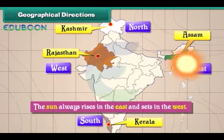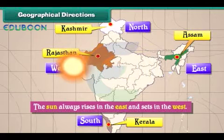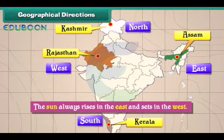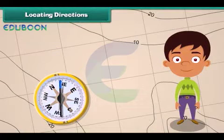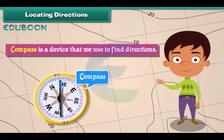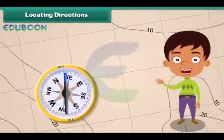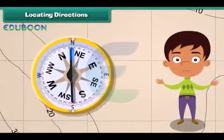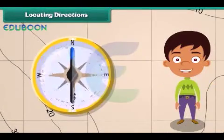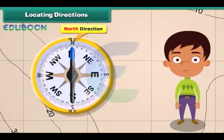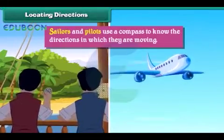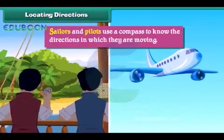The sun always rises in the east and sets in the west. A compass is a device that we use to find directions. A compass has a needle that rotates to indicate direction. The head of the needle always points towards north and the tail towards south. Sailors and pilots use a compass to know the directions in which they are moving.